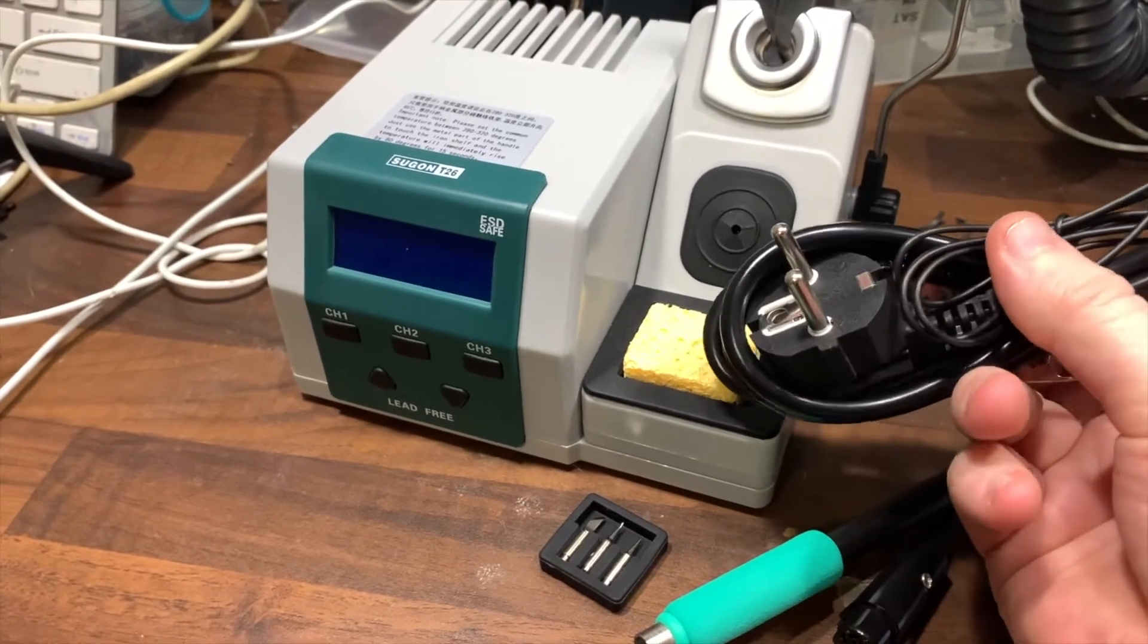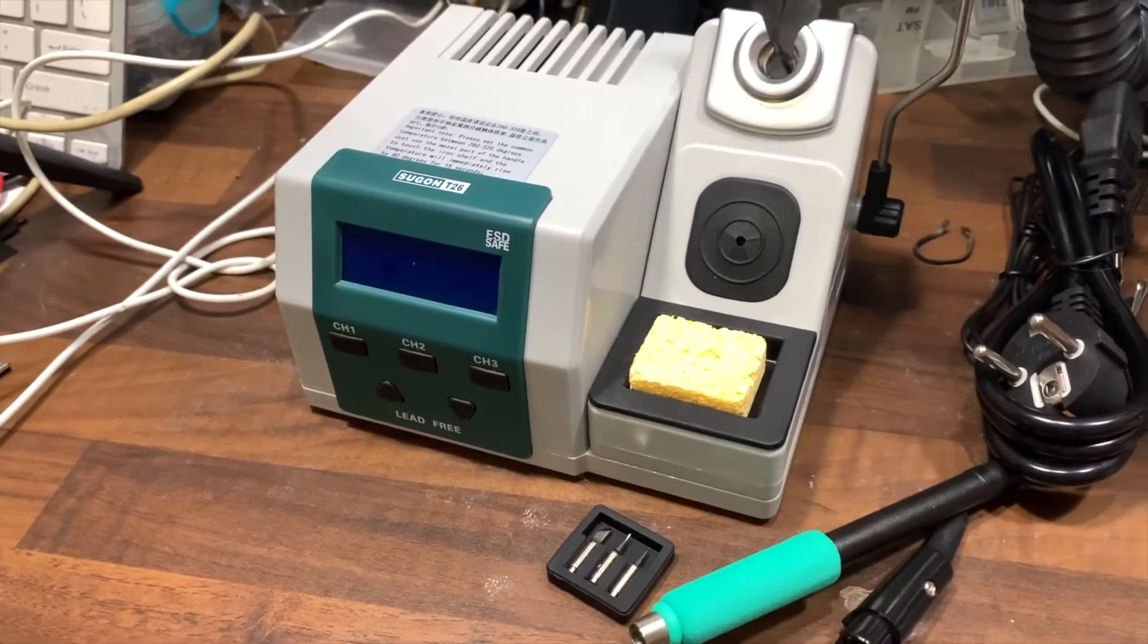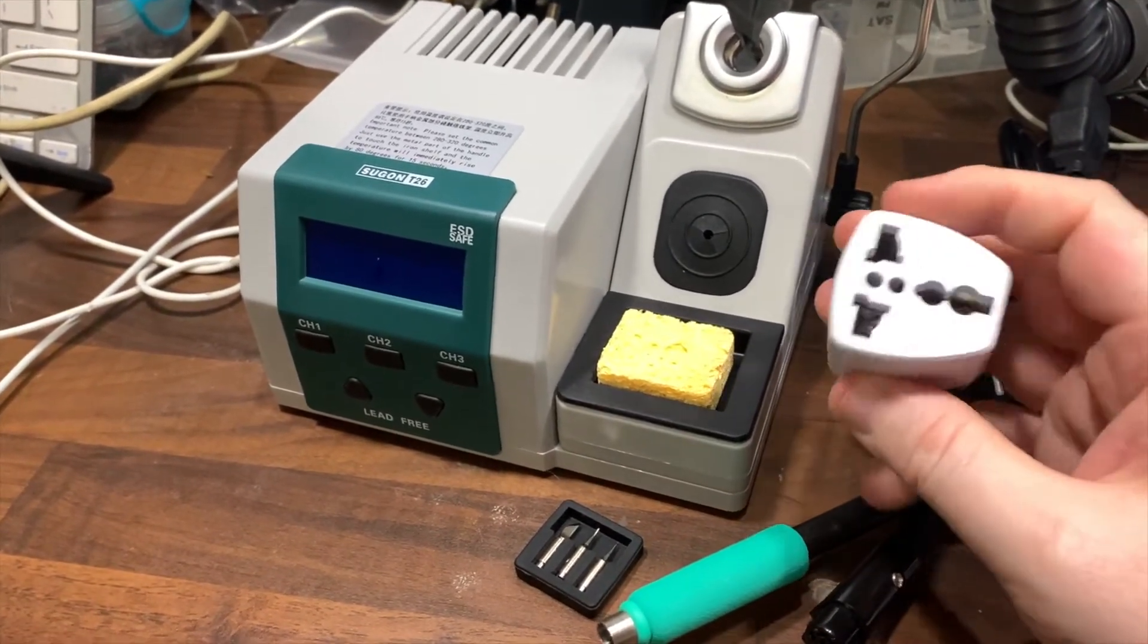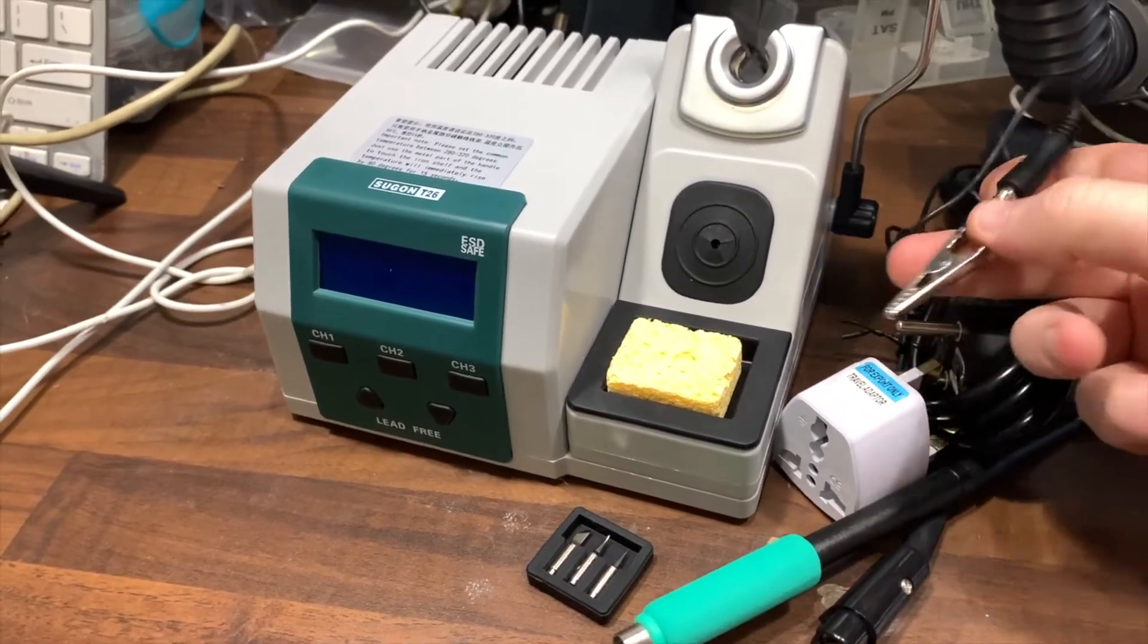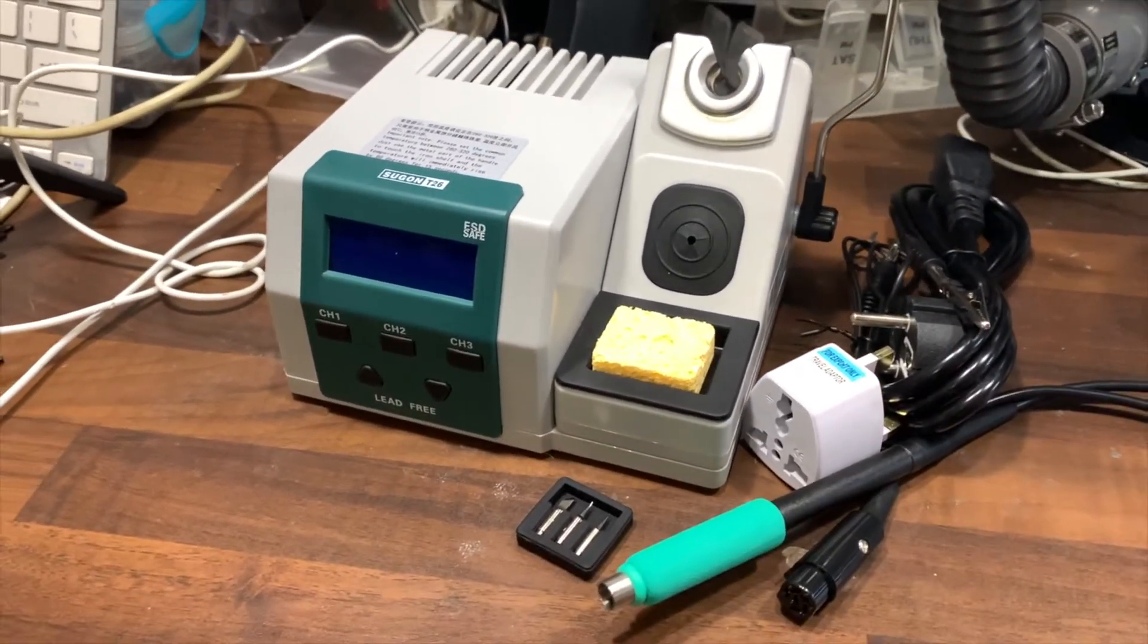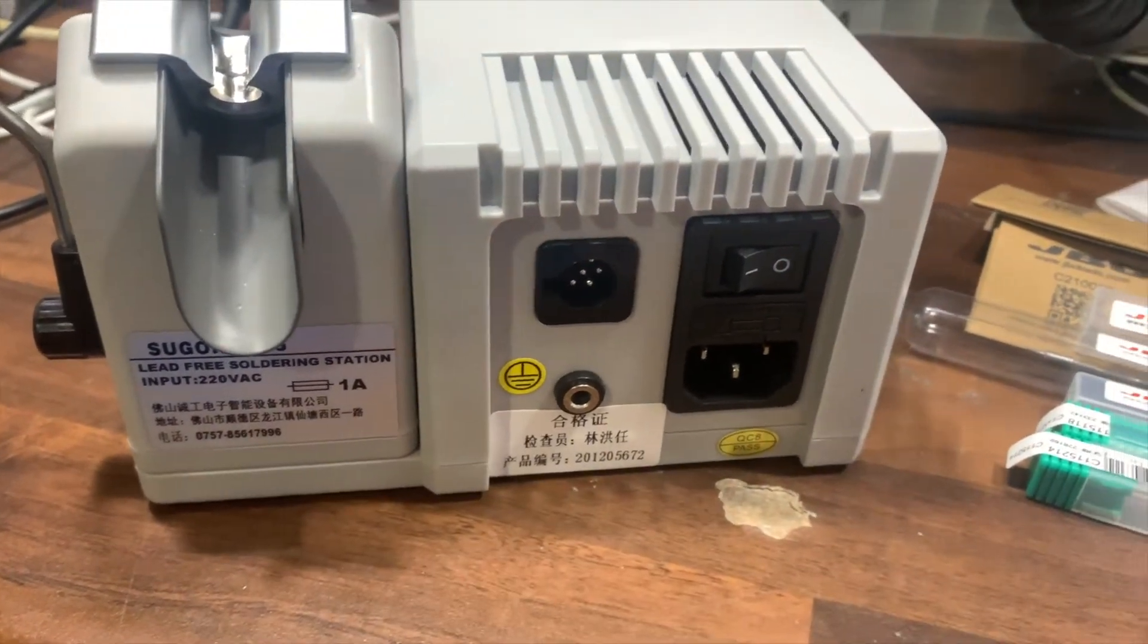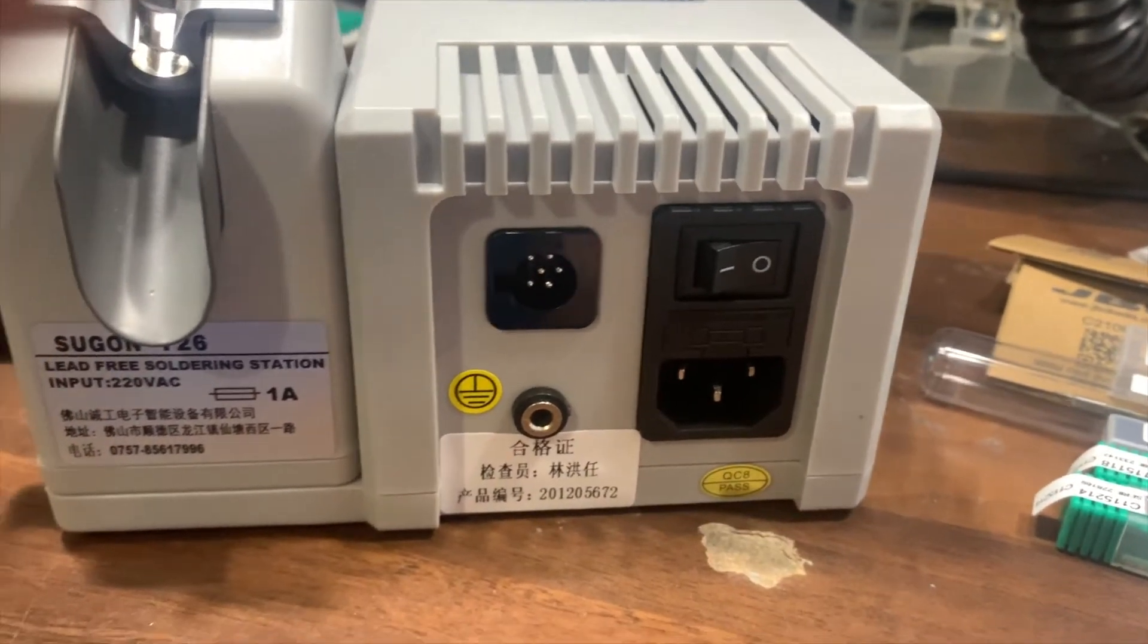One bad thing, it does come with some funny looking plug, a bit like the other Sugon station did. But you can get around this with a UK adapter or you could just go out and buy a kettle lead with a three pin plug. I did that with the other station and it's all working absolutely fine. This station is rated at 220 volt AC so it's perfectly safe on a three pin plug to UK standards.